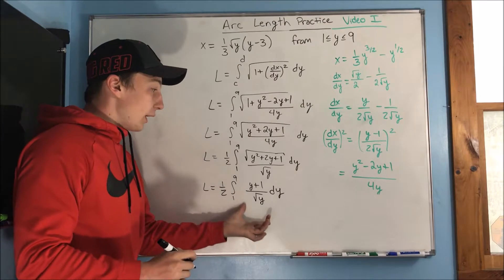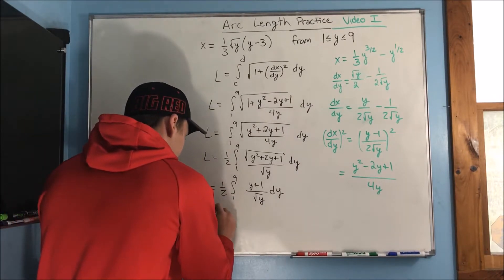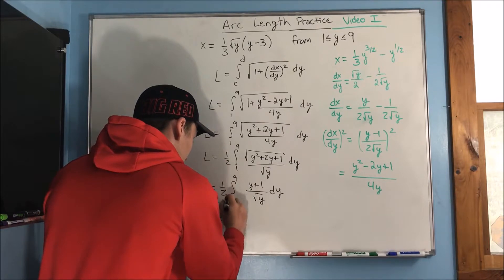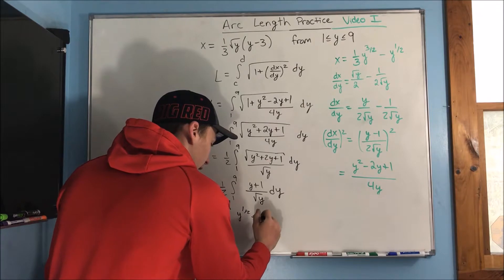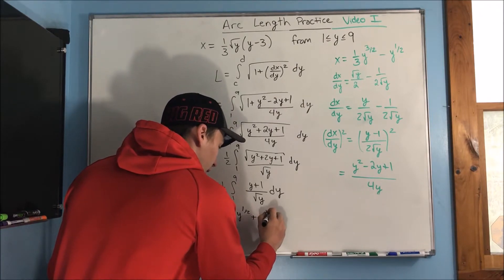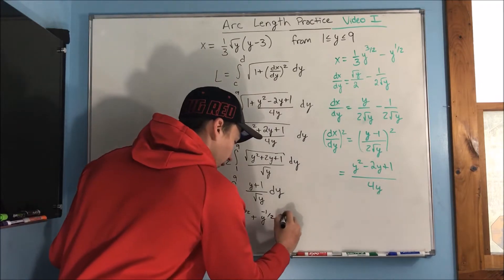And now, we can actually do that division. We end up with y to the 1 half plus y to the negative 1 half dy.